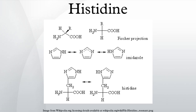Chemical properties: the conjugate acid of the imidazole side chain in histidine has a pKa of approximately 6.0. This means that at physiologically relevant pH values, relatively small shifts in pH will change its average charge.